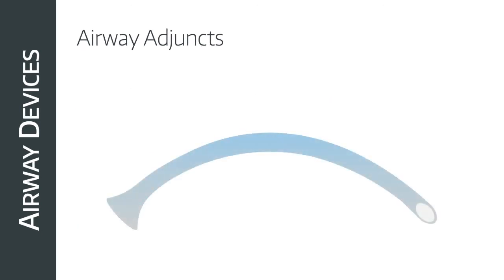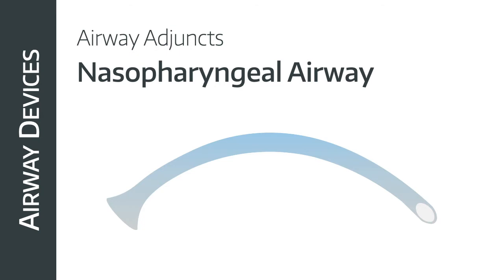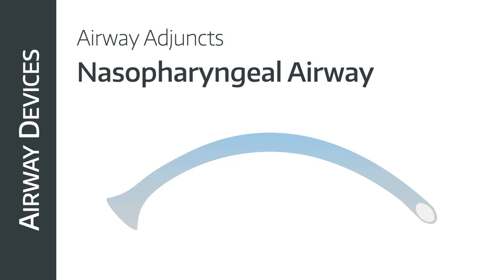First up: nasopharyngeal airways. These are passed through the nostril into the posterior pharynx. When you do this, you must slide the tube posteriorly along the nasal floor — not cephalad up into the brain, as you could cause serious damage. It doesn't stimulate the gag reflex, so this is a great choice for semi-conscious patients who won't tolerate an oropharyngeal airway. A nasopharyngeal airway consists of soft plastic tubing with a flange at the proximal end to prevent inadvertent loss of the device into the patient's airway.